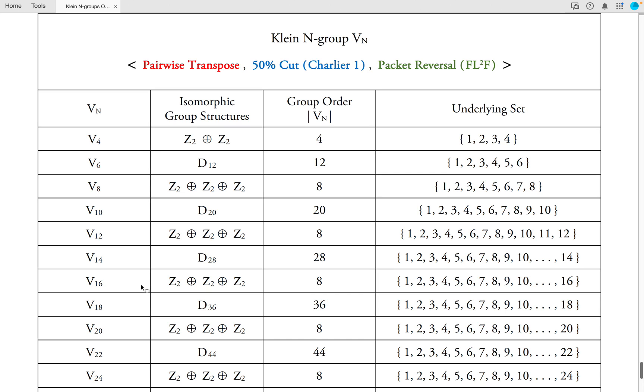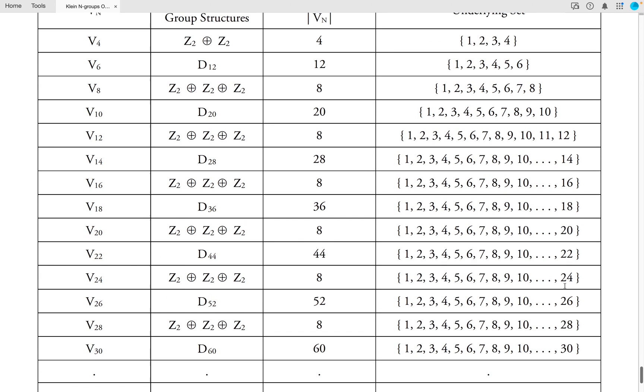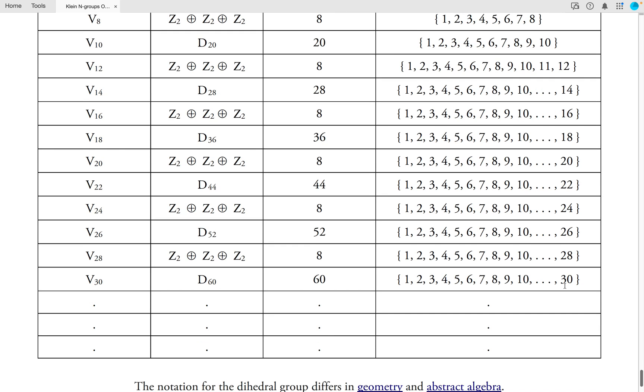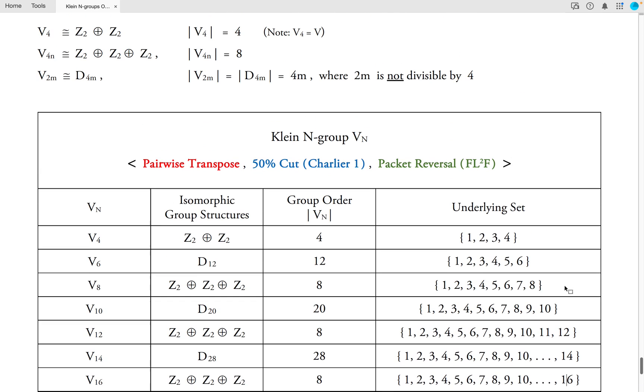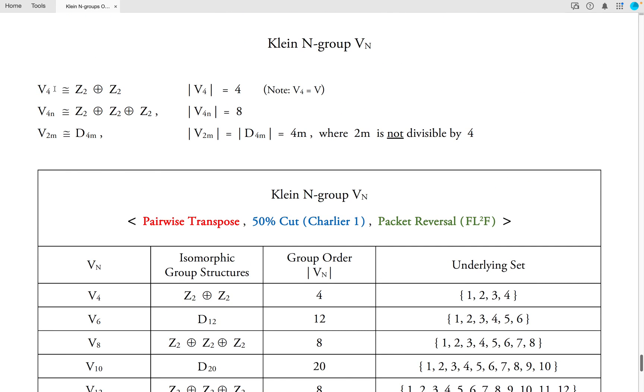Here is V16, which we just now looked at, which is isomorphic to the direct sum of Z2 with itself three times, its order is 8, and the underlying set of elements is 1 through 16. So this gives a complete list of all of the group structures that come from generalizing the Klein 4 group in the way that we have generalized it on this channel. And once again, it's summarized as above. So here is the full description of all Klein N groups, where N is any even number larger than or equal to 4.